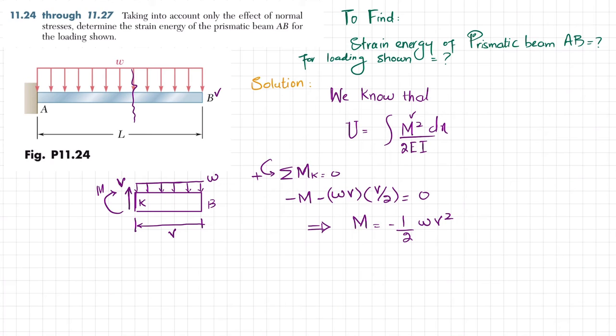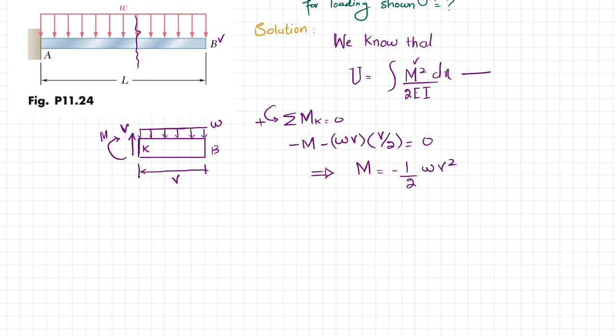Now we will apply equation one. The total strain energy U equals the integral from 0 to L of M squared dV divided by 2EI, where dV replaces dx because V is the horizontal distance we have taken.